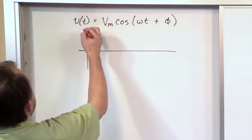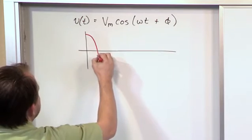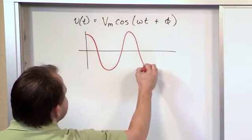The cosine function, if there's no phase angle, if the phase angle is zero, then it's going to start up here and kind of go down and up like this, and we've talked about this many times.